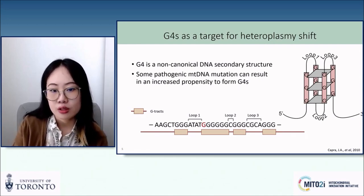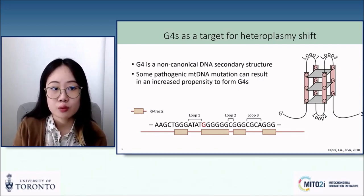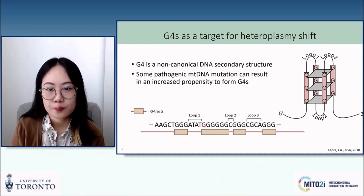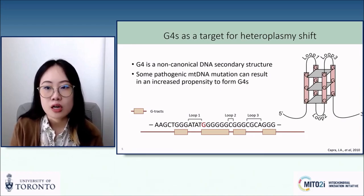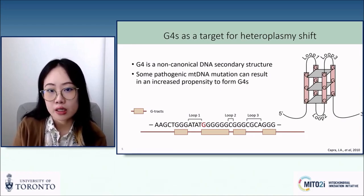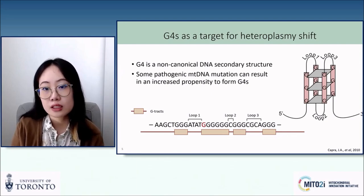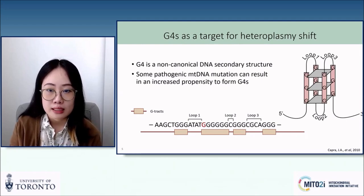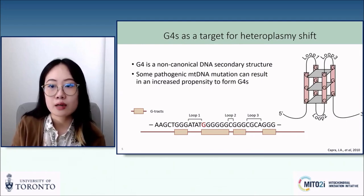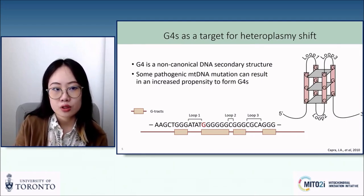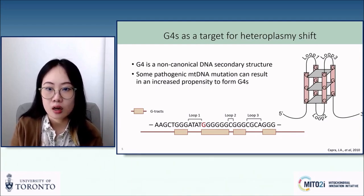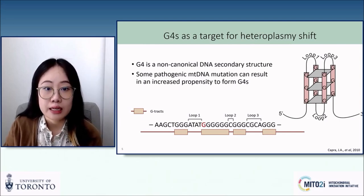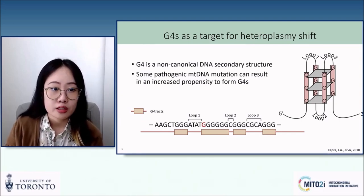As an example, I'm showing you here on the bottom the sequence around region 10191, which is a pathogenic mutation leading to a disease called Leigh syndrome. The pink bars denote guanine tracts that can participate in Hoogsteen bonding to form a G4 structure. The position of the T-to-C mutation at 10191 is marked in red. With the C mutant, the sequence can actually form two types of G4. The first form is where any guanine in this long G-tract, second from the left, can participate in binding as one guanine stretch.